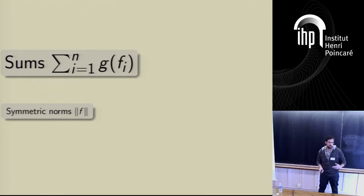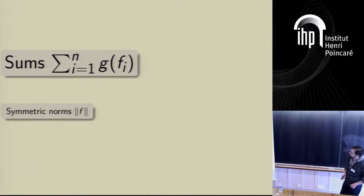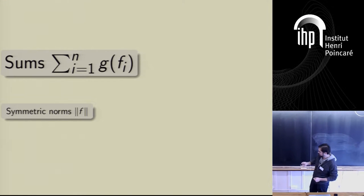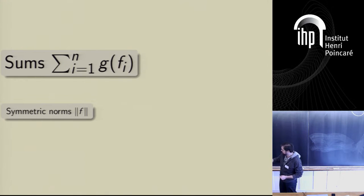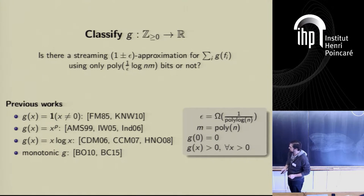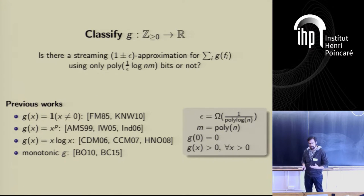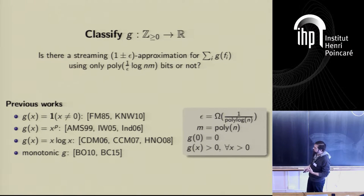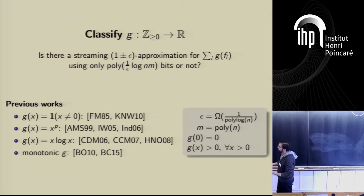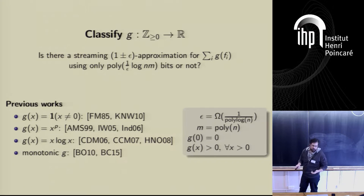The talk is in two parts. The first part is about functions of the form where I compute a sum over the coordinates — a special case that contains frequency moments, but also entropy and other examples. The goal: given a function g, I'd like to classify whether I can approximate this function in very small space, like polylogarithmic space, or does it require large space — polynomial in n and m?